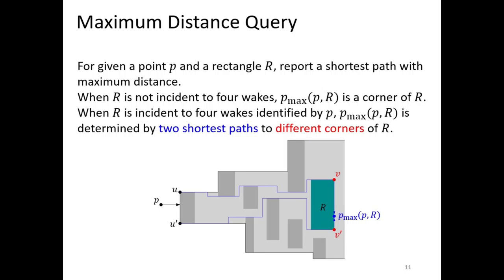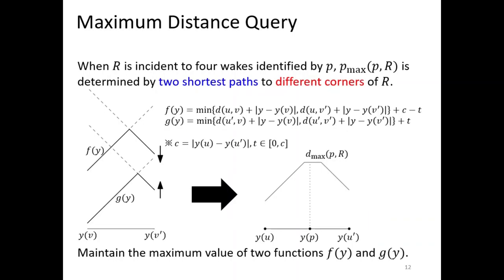Next is the maximum distance. Likewise, when R is not incident to the four wakes, the shortest path from P to R is XY-monotone, and the maximum distance is determined by a corner of R. When R is incident to the wakes, the point determining the maximum distance lies on the opposite side to P and the identified side. We know that four distances d(U,V), d(U',V), d(U,V'), d(U',V') are fixed, where V and V' are the two endpoints of the opposite side of R. So we use those four distances to handle the maximum distance query.